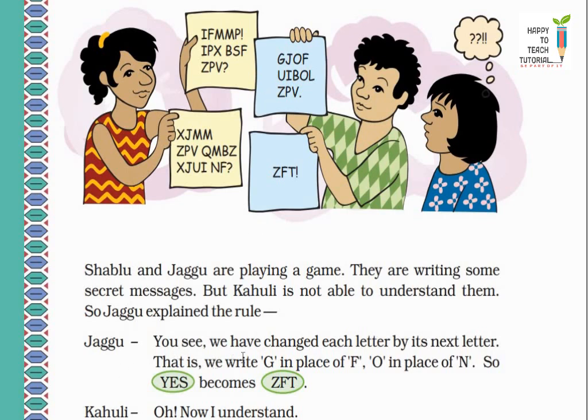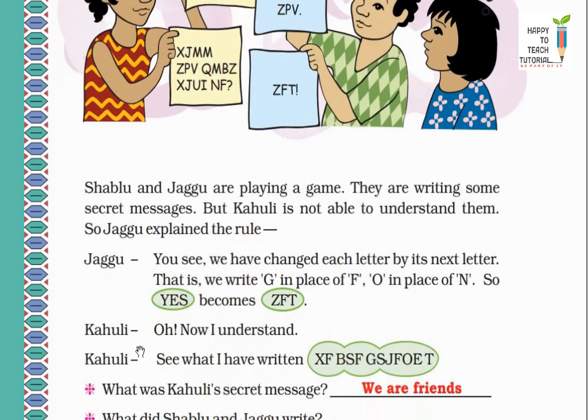Now let's see next: More secret messages. Here you can see the three children are playing with secret messages. Look, Shablu and Jaggu are playing a game. They are writing some secret messages. This is Shablu, this is Jaggu. But Kahuli is not able to understand them. This is Kahuli. Kahuli cannot understand what Shablu and Jaggu have written. So Jaggu explains the rule.